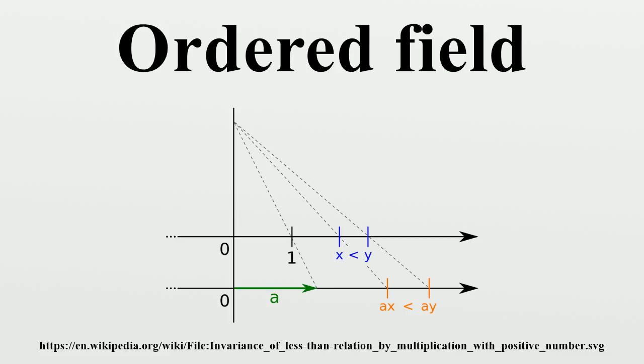If X is in F, then X squared is in P. The element minus 1 is not in P. A pre-ordered field is a field equipped with a pre-ordering P. Its non-zero elements P form a subgroup of the multiplicative group of F.